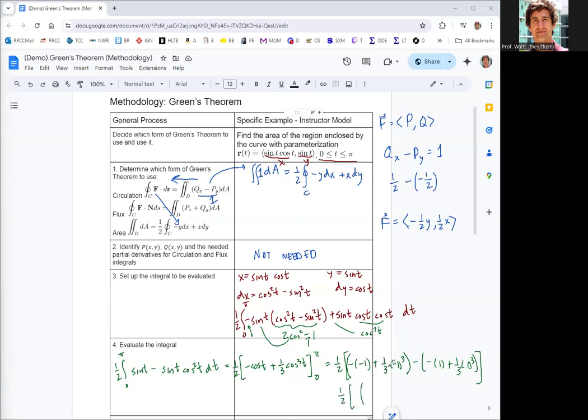So that's one minus a third, which is two thirds. The second group in parentheses is negative one plus a third, which is negative two thirds. Two thirds minus negative two thirds is four thirds. So two thirds times one half is two thirds. Two thirds should be the area of the region enclosed by that curve, and we managed to do it without doing the double integral.